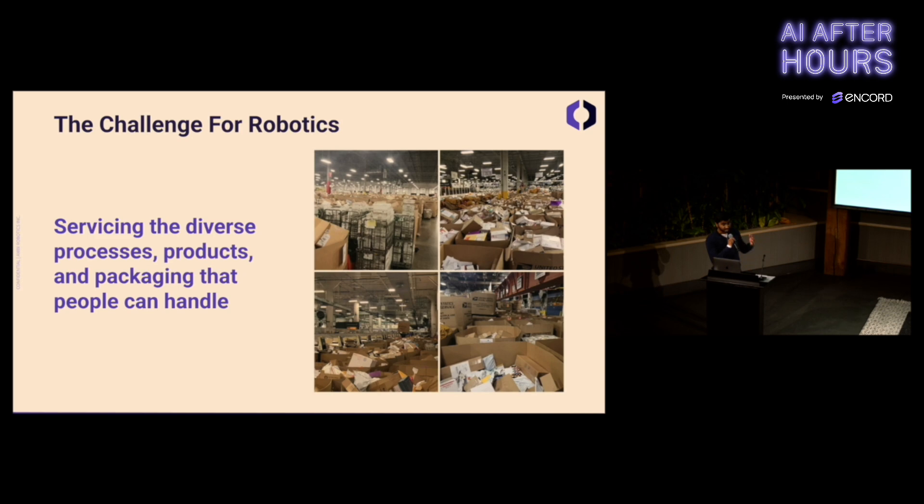The challenge here is servicing the diverse processes. Different warehouses do things slightly differently. The diverse products—you have a range of products from large, heavy boxes to small bags. And the diverse packaging, so you have different colors, textures, and a lot of damaged goods. This is the problem we're solving at Ambi Robotics using AI-powered solutions.